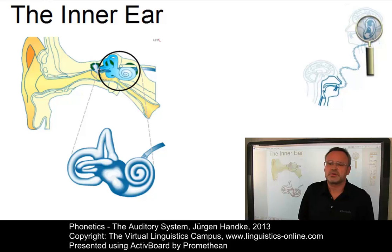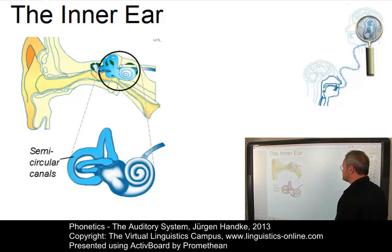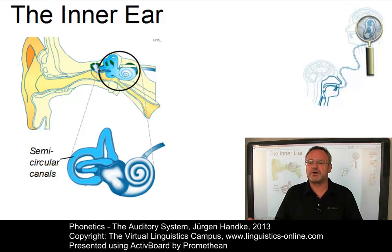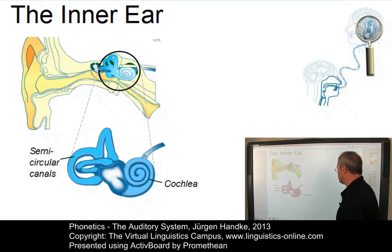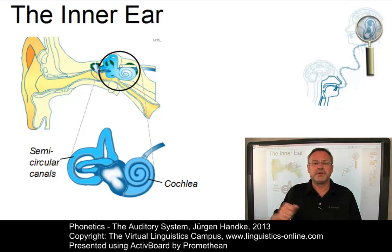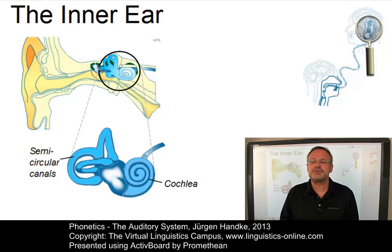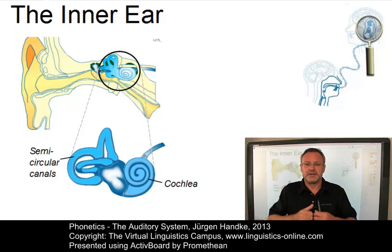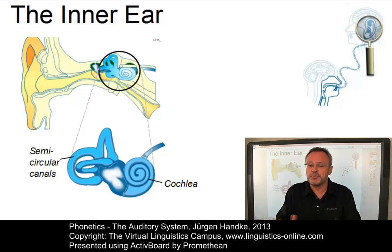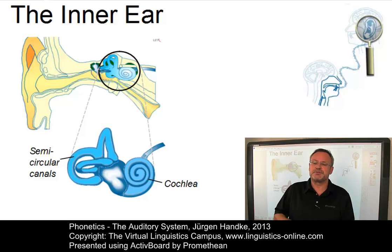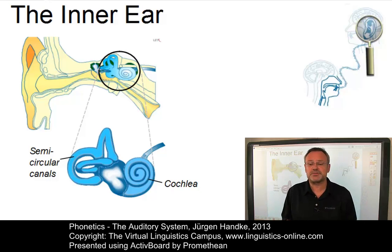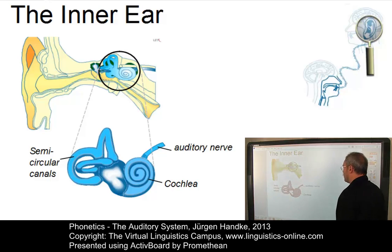The inner ear contains the vestibular organ with the semicircular canals, which control our sense of balance. And then there is the cochlea, a coiled cavity about 35mm long, resembling a snail's shell. The cochlea is responsible for converting sounds which enter the ear canal from mechanical vibrations into electrical signals. The mechanical vibrations are transmitted to the oval window of the inner ear via the stirrup. This conversion process, known as transduction, is performed by special sensory cells within the cochlea. The electrical signals which code the sounds are carried to the brain by means of the auditory nerve.